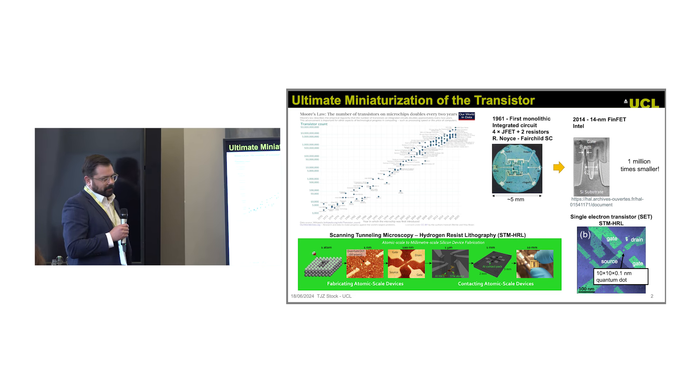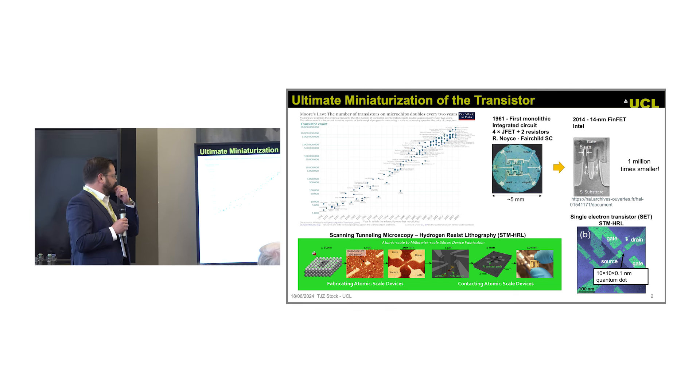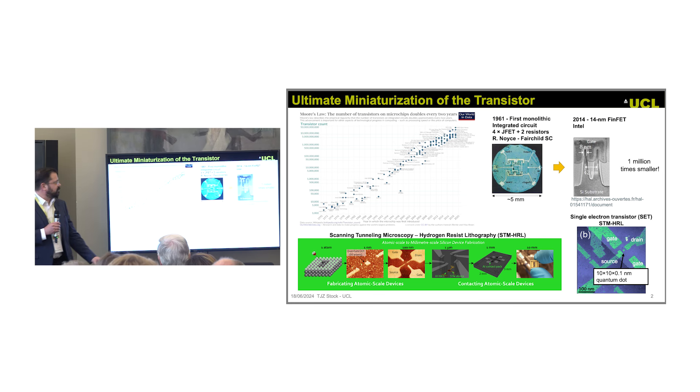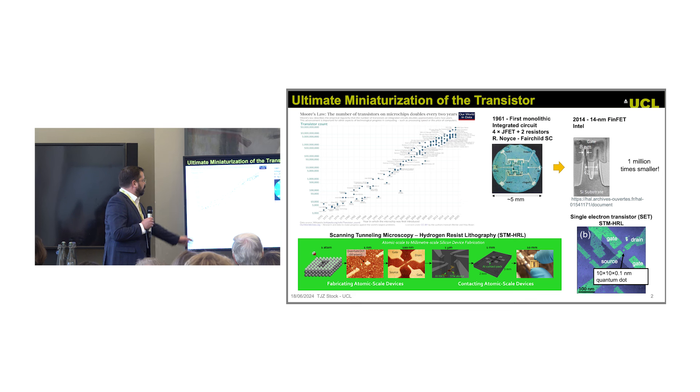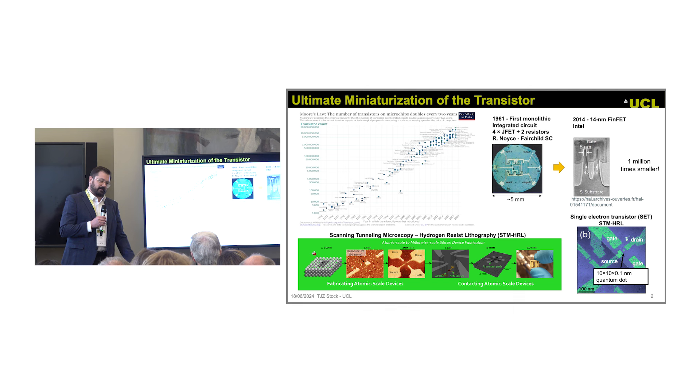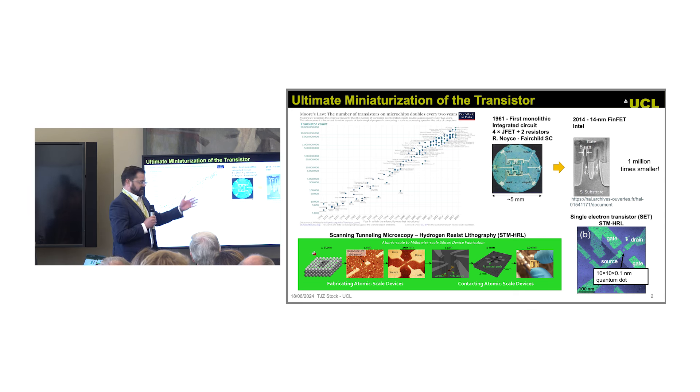Here we have Moore's Law, which everyone will be familiar with. We have examples even pre-Moore's Law, the very first monolithic integrated circuit with four JFETs, the whole crystal about five millimeters across. Then 55 years later, we have the 14 nanometer node for the Intel FinFET.